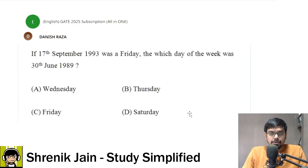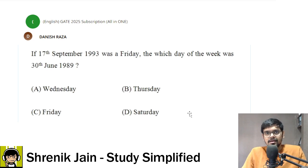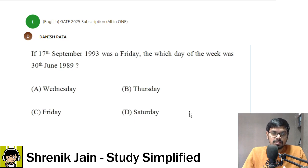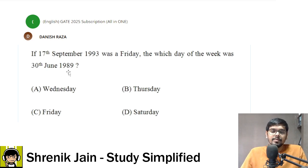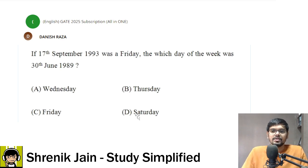This is one of the expected GATE questions from the aptitude section in reasoning, and the topic is calendar. This doubt was asked by Danish on the GATE 2025 all-in-one doubt solving group. The question is: if 17th September 1993 was a Friday, which day of the week was 30th June 1989? You have to determine whether 30th June 1989 was a Thursday, Friday, or Saturday. Pause the video and try, then look at my solution.